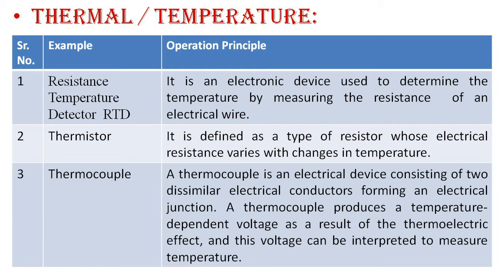Starting with the first parameter: temperature. We need to know various examples of temperature sensors and how they measure temperature. The first example is the Resistance Temperature Detector, or RTD. It is an electronic device used to determine temperature by measuring the resistance of an electrical wire — as the resistance of the wire changes, it determines the temperature.